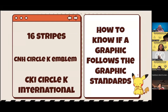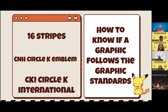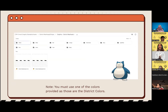To know if a graphic follows graphic standards, it must have 16 stripes, the CNH Circle K emblem, and the words 'CKI Circle K International.' Sometimes graphics come in with too many stripes — I'll count them and they end up being 18, and then I have to notify them to repost. Make sure you do not change the colors of the stripes or logo — keep everything in its original form.